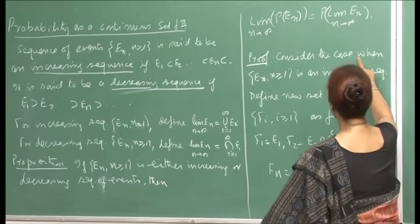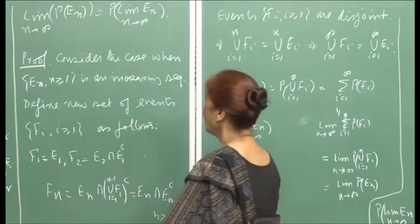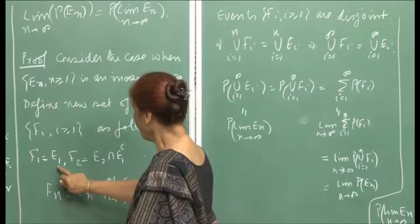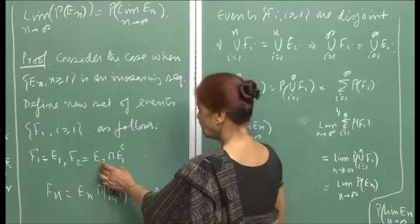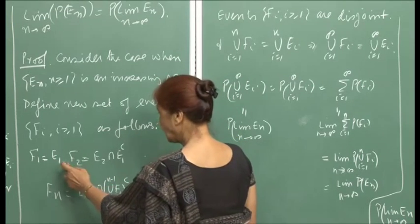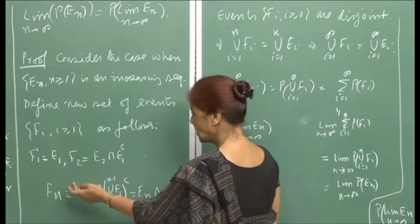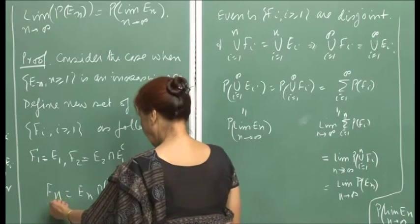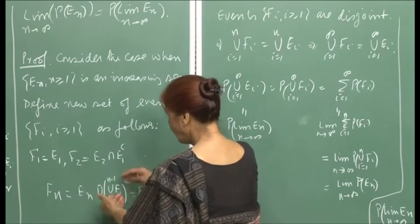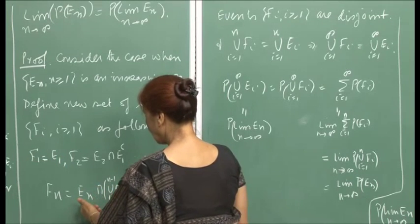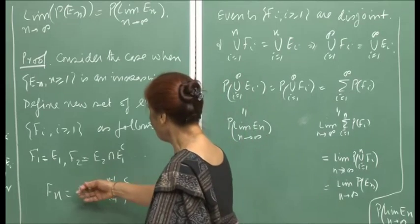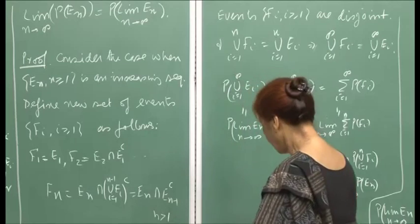For the proof, consider the case when {Eₙ} is an increasing sequence. Define new events Fᵢ: F₁ = E₁, F₂ = E₂ ∩ E₁ᶜ, so whatever was common in E₁ and E₂ is removed from F₂. Therefore F₁ and F₂ are disjoint. In general, Fₙ = Eₙ ∩ (∪ᵢ₌₁^{n−1} Eᵢ)ᶜ. The Fᵢ's are all mutually disjoint events.